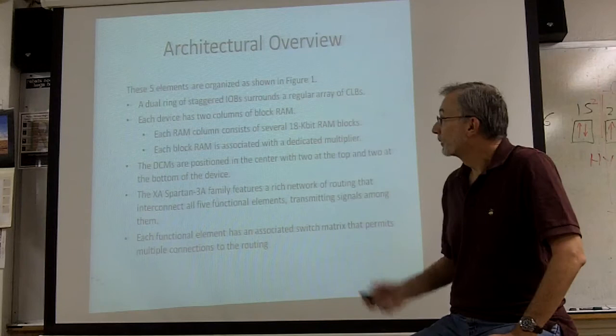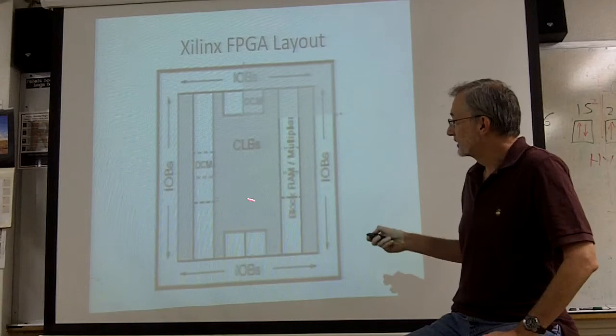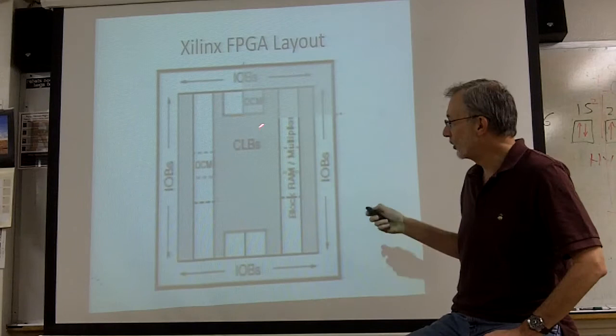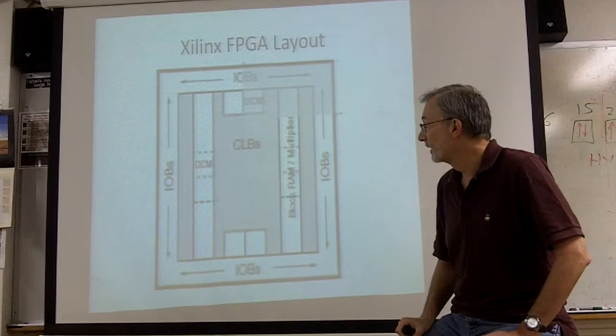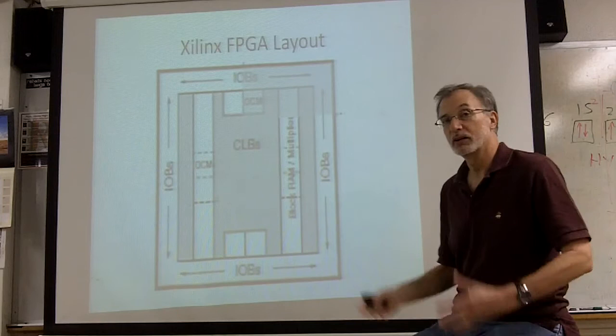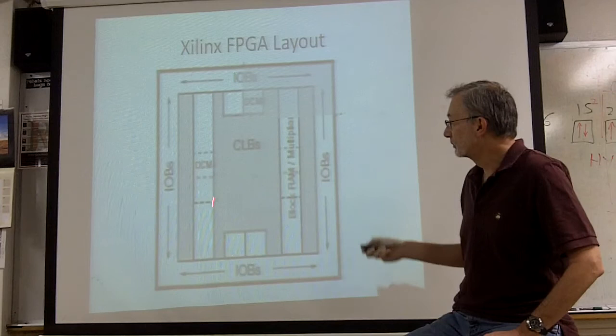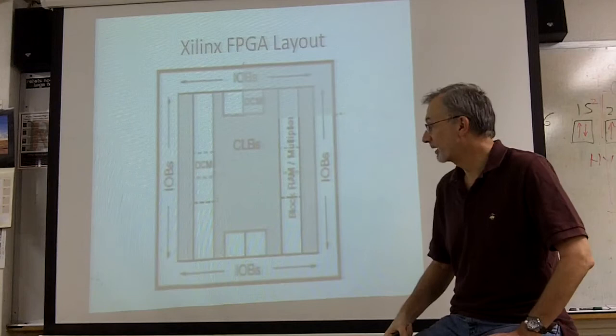We're going to show how these different blocks are organized in the FPGA. This is a kind of blurry image from the Xilinx website. These configurable logic blocks, which form the heart of the FPGA, are distributed all over the FPGA in the center, along the edges. The other blocks include the I/O blocks, which you see all around the outside edge of the chip. The block RAM is configured along these stripes on each side of the FPGA. There's a multiplier, one associated with each 18 kilobit memory, deployed in these stripes. And then there are digital clock managers, two at the top, two at the bottom, and a few on the sides.